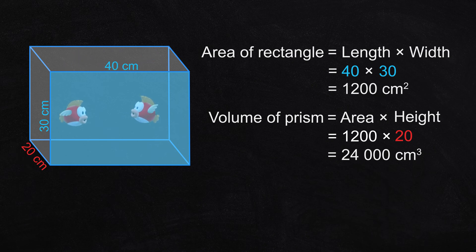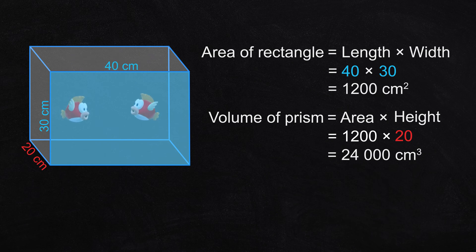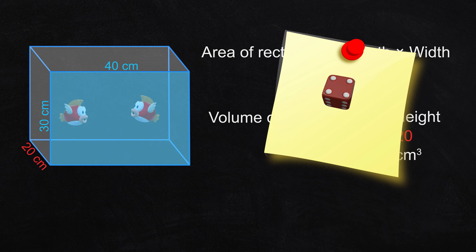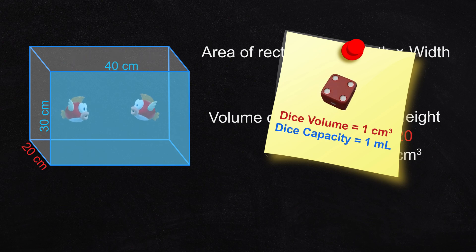But in this example we have one more step, because this rectangular prism is actually a fish tank, and the volume is the water. We will convert cubic centimeters to milliliters. One cubic centimeter is equal to one milliliter of water. This dice measures one centimeter by one centimeter by one centimeter — it's made of solid plastic, so we say its volume is one cubic centimeter. But if this dice was made of water, we say its volume or its capacity is one milliliter.